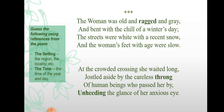Let us see the first stanza: 'The woman was old and ragged and grey and bent with the chill of a winter's day. The streets were white with a recent snow and the woman's feet with age were slow.'